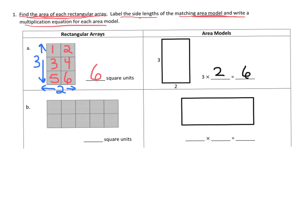Let's do another one. We've got 1, 2, 3, 4, 5, 6, 7, 8, 9, 10, so we have an area of 10 square units. Now when it comes to labeling our area model with the side lengths, this side length is going to be 2, and this side length right here is going to be 1, 2, 3, 4, 5. So our multiplication equation is going to be 2 times 5 equals 10.